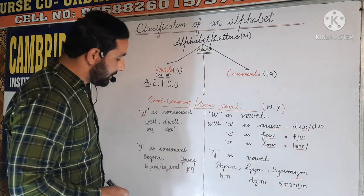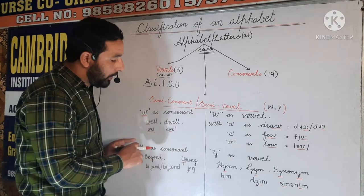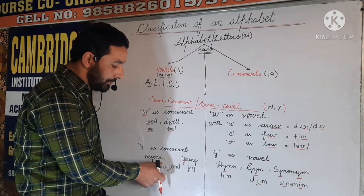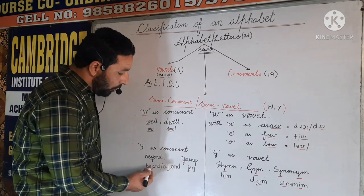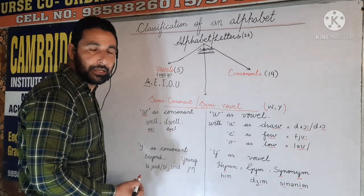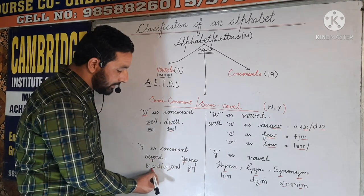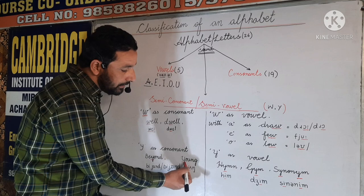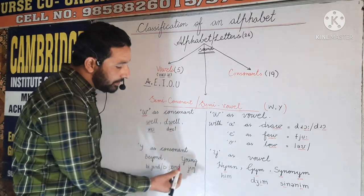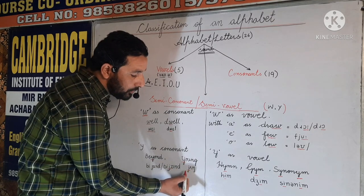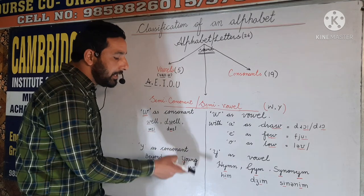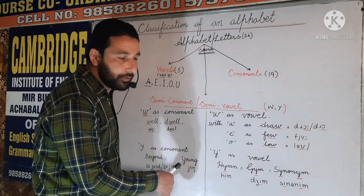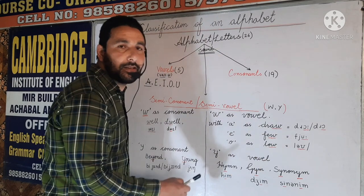Now let us concentrate on Y — where Y is considered a consonant and where Y is considered a vowel. Let us take the example of 'beyond.' Y has the pronunciation /j/ and in phonetics is considered a consonant sound. Another example is 'young' — this Y also has the sound /j/ and in phonetics is considered a consonant sound.